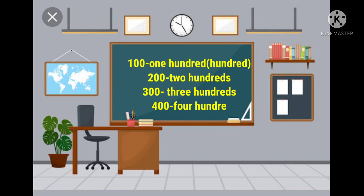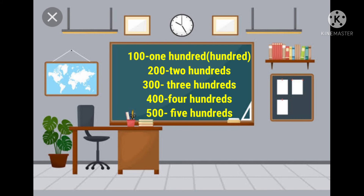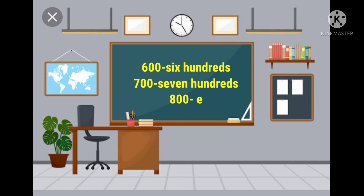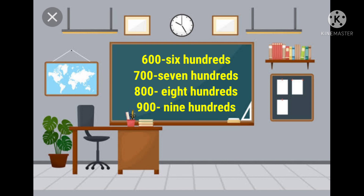Children: one zero zero — one hundred. Two zero zero — two hundreds. Three zero zero — three hundreds. Four zero zero — four hundreds. Five zero zero — five hundreds. Six zero zero — six hundreds. Seven zero zero — seven hundreds. Eight zero zero — eight hundreds. Nine zero zero — nine hundreds.